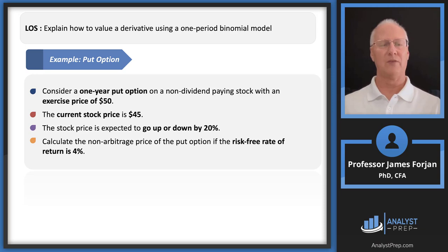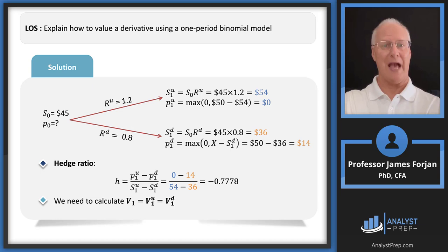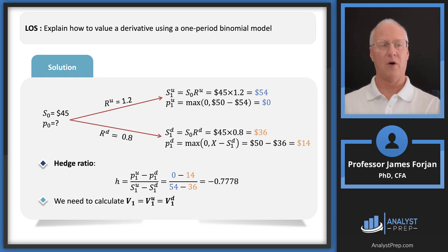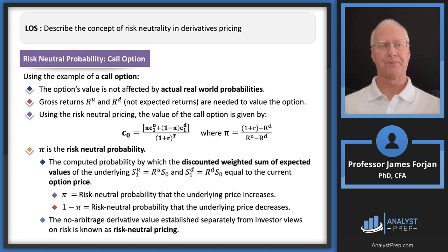For the put option example: one-year put option on a non-dividend paying stock, exercise price 50, current stock price 45, up or down by 20%, risk-free rate 4%. When the stock price goes up, the put is out of the money — value zero. When the stock falls, the put is in the money — value 14. Working through all the math gives a put option price of $5.38. Pause the video and verify this yourself before the exam.